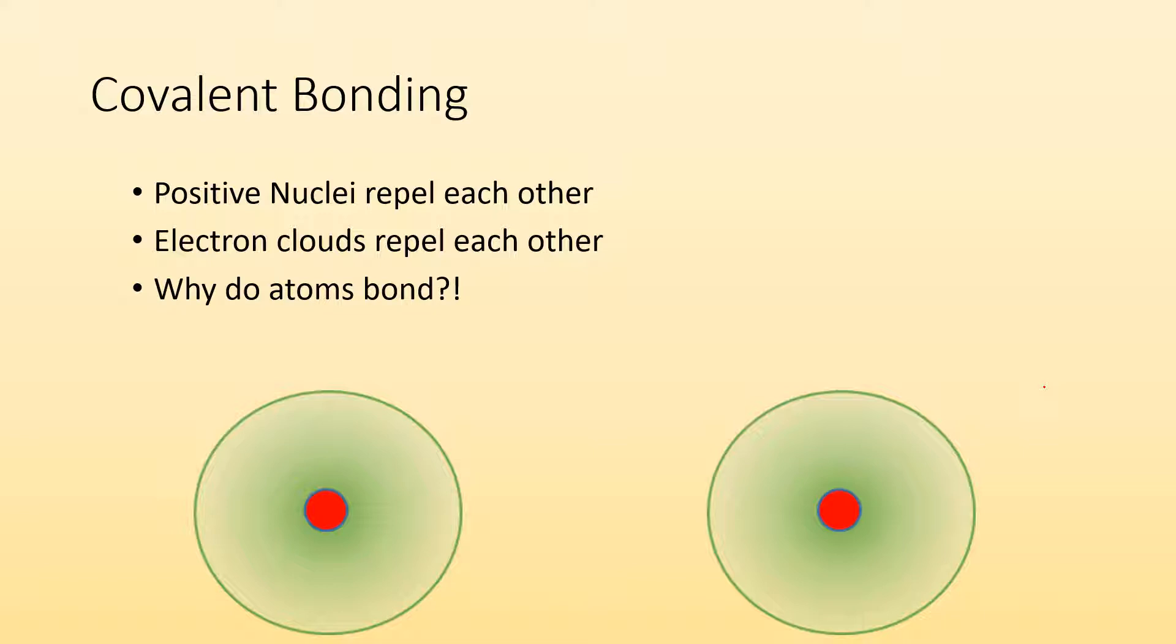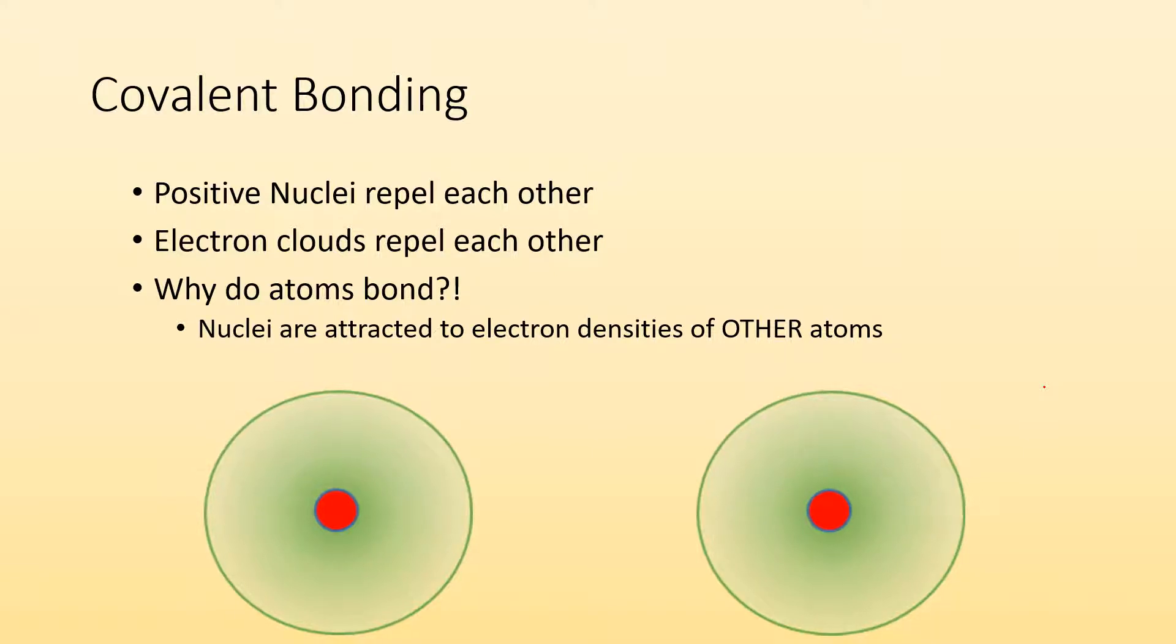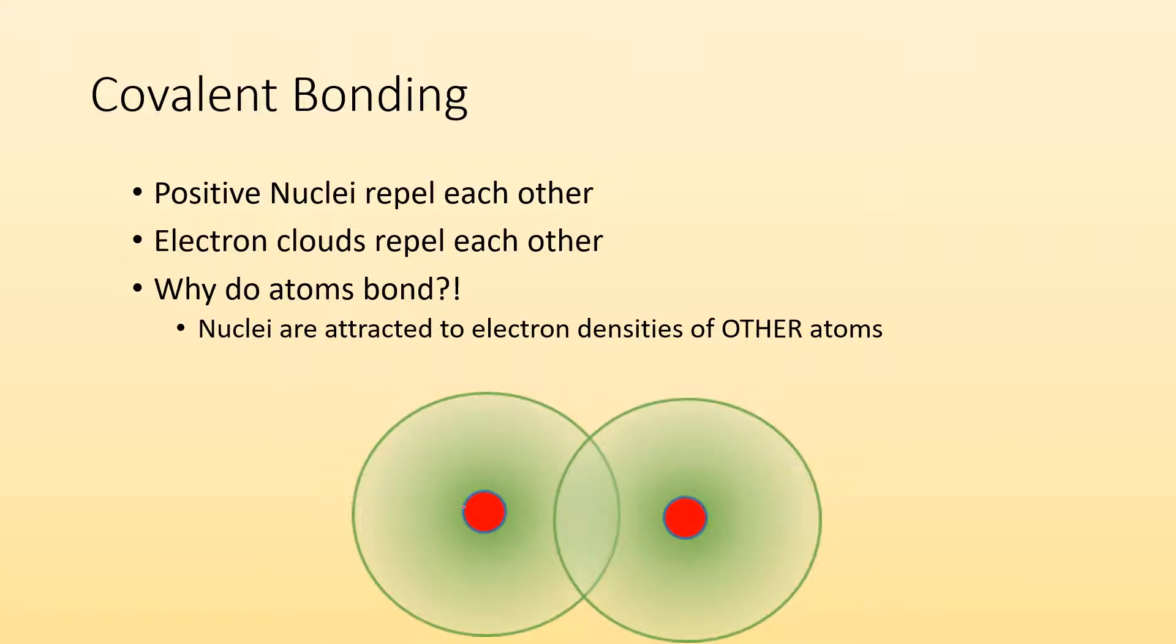Well, the short answer is the nuclei are attracted to the electron densities of the other atoms. So when they come together and bond, sure, like this nucleus is positive, but all of this cloud is negative. So it's being attracted to that negativeness and then vice versa the other way. This nucleus that's positive is attracted to that other atom's electrons, which is going to pull them together. Now, if you try to get them closer than they are right now, yeah, they're going to repel and push away, but they found a low energy state where they're bonded together.